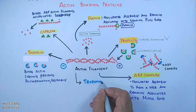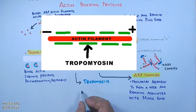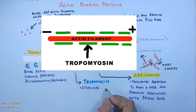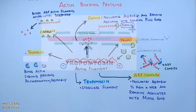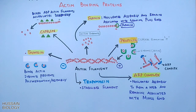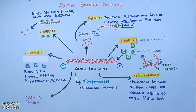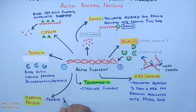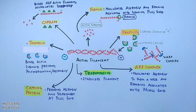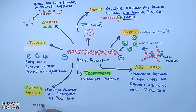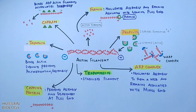Then we have tropomyosin, which binds along the sides of the filament and stabilizes the actin filament. Next is the capping protein, which caps the plus end of the actin filament and prevents both assembly and disassembly. These capping proteins regulate the length of the actin filament.